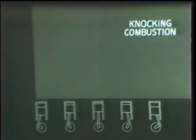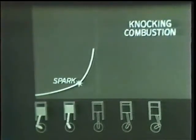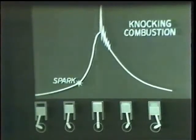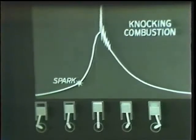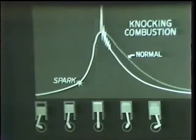On the graph, knocking combustion can be illustrated very clearly. Again, on the compression stroke, pressure increases. When the spark ignites the mixture, the pressure increases very rapidly. As the pressure reaches its peak, knock shows up as violent and rapid pressure changes. Compare this graph with the graph of normal combustion. Knock results in loss of power. It also causes overheating and excessive wear on the engine.